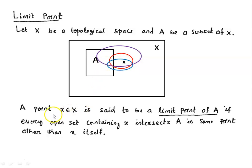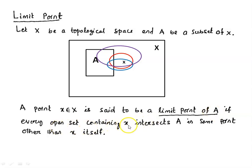So the formal definition of limit point is: a point x in X is said to be a limit point of the set A if every open set containing x intersects A in some point other than x itself.